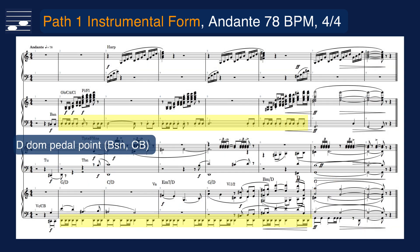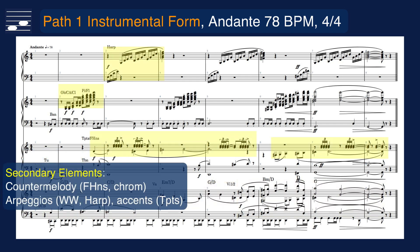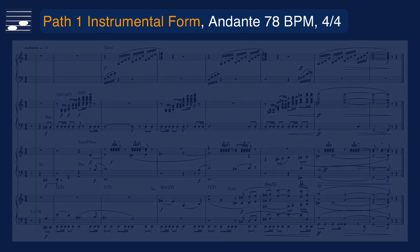Note the dominant pedal pitch D as staccato note patterns in bassoon and contrabass. The primary element in this setting is the melody that moves through the string section and that contains many appogiaturas to generate added harmonic interest. The secondary elements are the chromatically ascending middle part for French horns, the arpeggio patterns in woodwind and harp, and the triplet trumpet motifs.